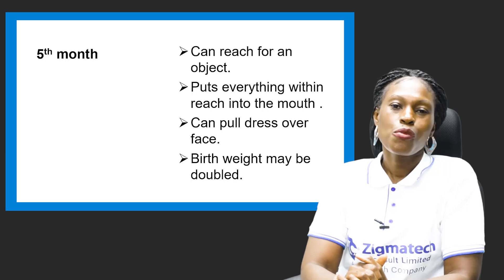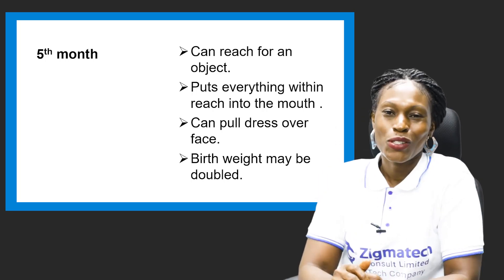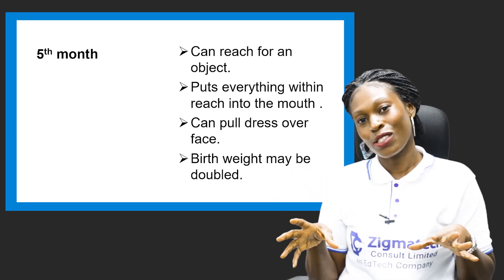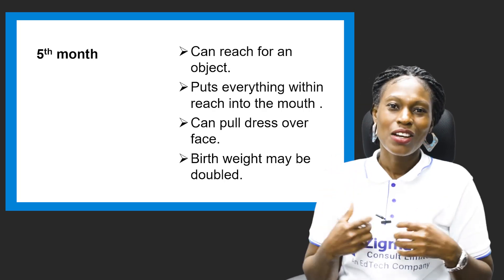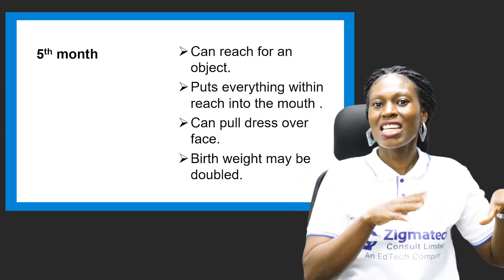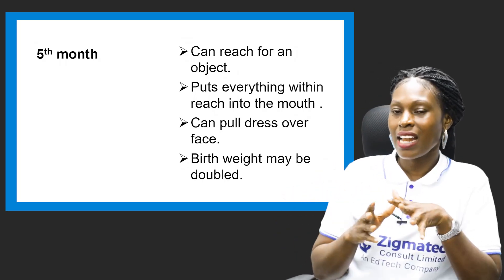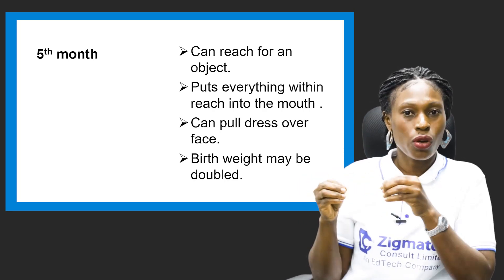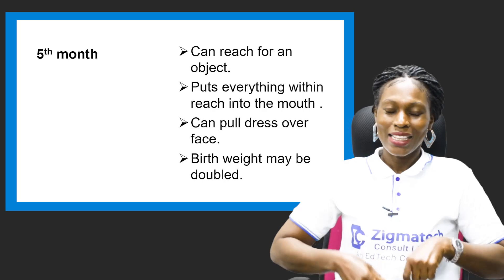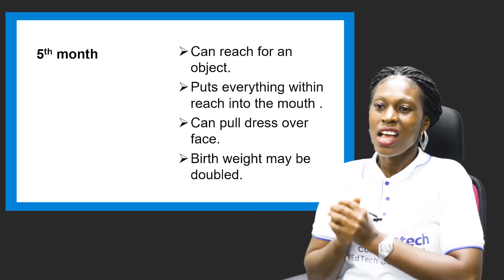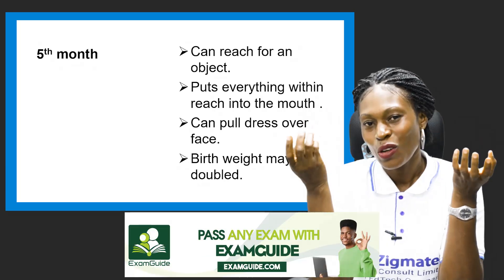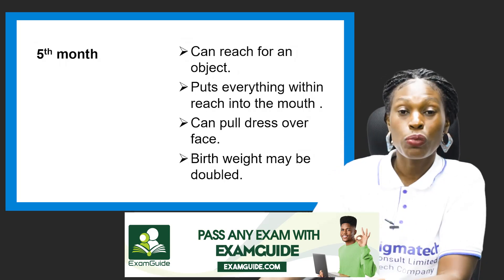At the fifth month, they can reach for an object — if it's on the bed, they can reach and hold it. They put everything within reach into their mouth. They can pull their dress over their face and bring it down. Their birth weight may be doubled at the fifth month because they are eating — breast milk and all of that.